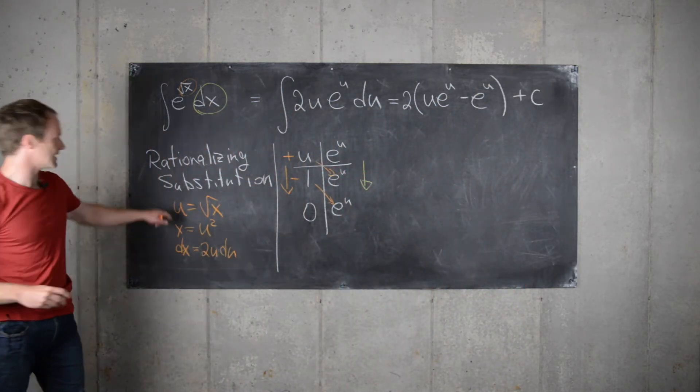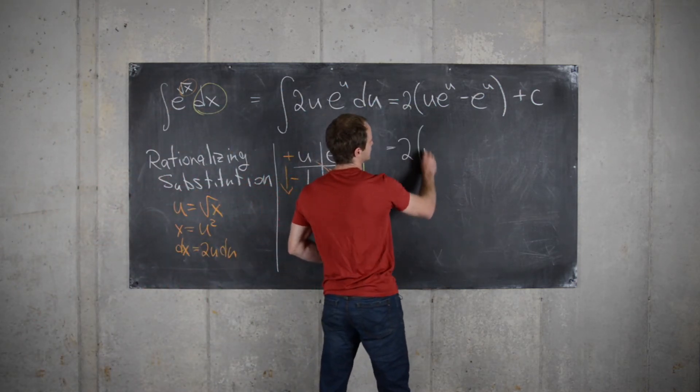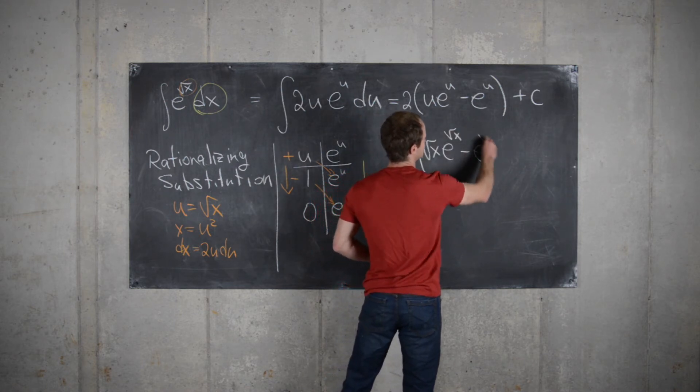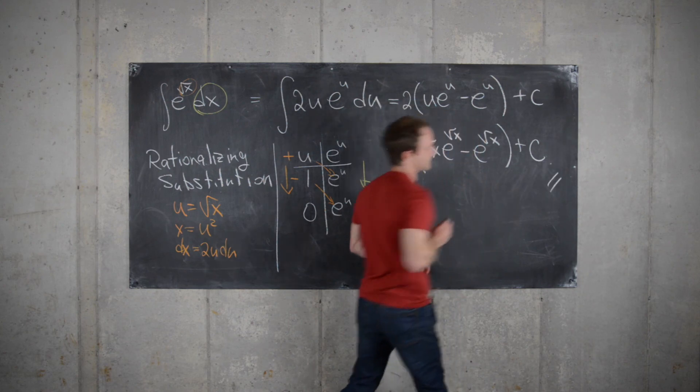And then, finally, if we put our substitution back in, we get 2 square root of x e to the square root of x minus e to the square root of x plus our constant. And that's the final answer.